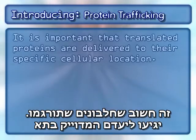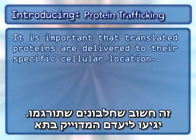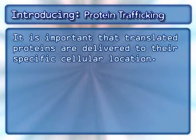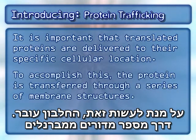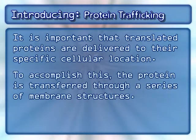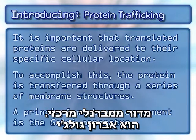It is important that translated proteins are delivered to their specific cellular location. To accomplish this, the protein is transferred through a series of membrane structures. A principal membrane component is the Golgi apparatus.